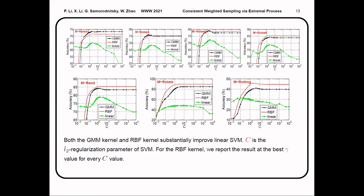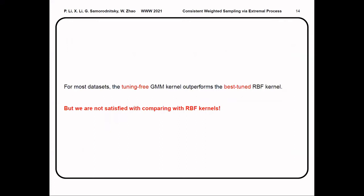First we see that both the GMM kernel and RBF kernel, which are non-negative kernels, substantially improve the linear SVM. And we also should note that the RBF kernel has the tuning parameter, and the presented results are actually the test accuracy of the best-tuned RBF kernel. That means that the tuning-free GMM kernel outperforms the best-tuned RBF kernel in many cases.